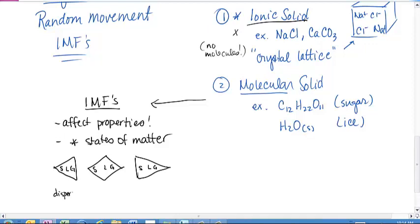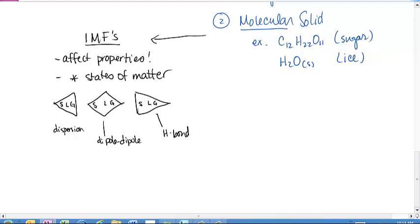Here's a diagram: the first picture represents dispersion, the second dipole-dipole, and the third hydrogen bonding. SLG stands for solid, liquid, gas. Dispersion forces are really, really weak, so molecules are not held together well. The vast majority of molecules with only dispersion tend to be gases; fewer tend to be liquids, and a tiny amount are solids. For example, carbon dioxide gas is nonpolar with dispersion. However, iodine, which is a solid, also happens to be nonpolar — so we can still have solids with only dispersion forces.